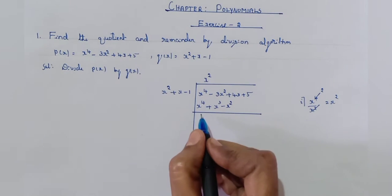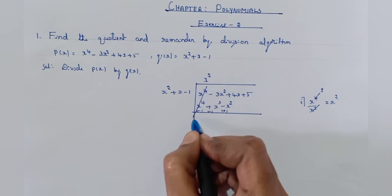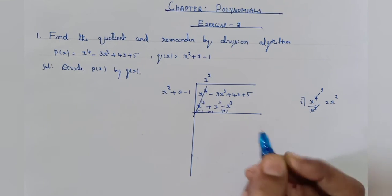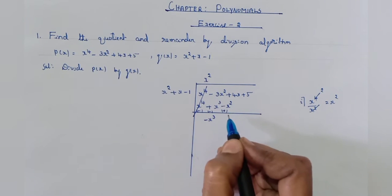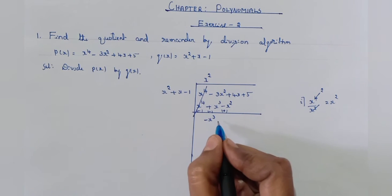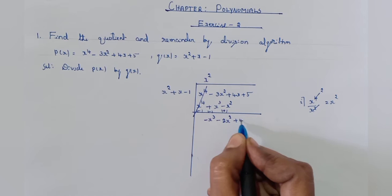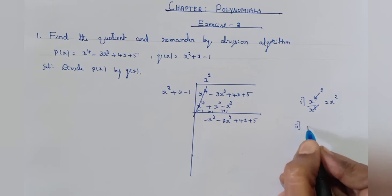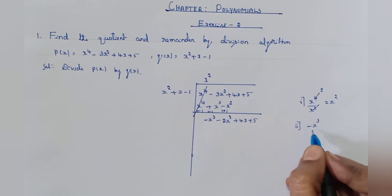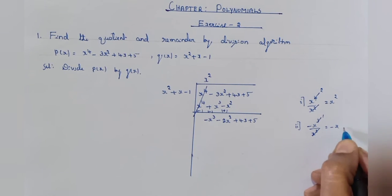Change the signs of the lower terms. Minus plus plus — x to the power of 4 minus x to the power of 4 get cancelled. Here, minus x cube, write as it is. Minus 3x square plus x square is minus 2x square plus 4x plus 5. The first term of the dividend is minus x square; cancel x square — another x is remaining, minus x.